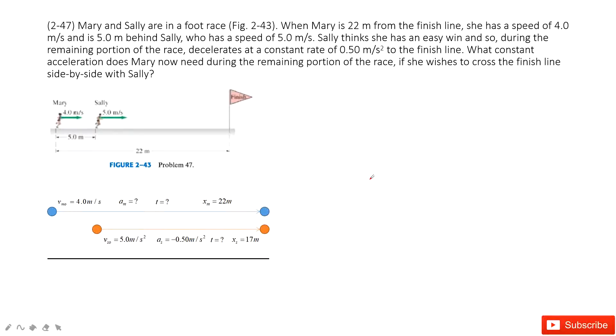Welcome to my channel, I'm Zhang Jingxu. Let's talk about problem 47 in chapter 2. In this one, it tells us two girls, Mary and Sally. So this is Mary, this is Sally, and they are running.